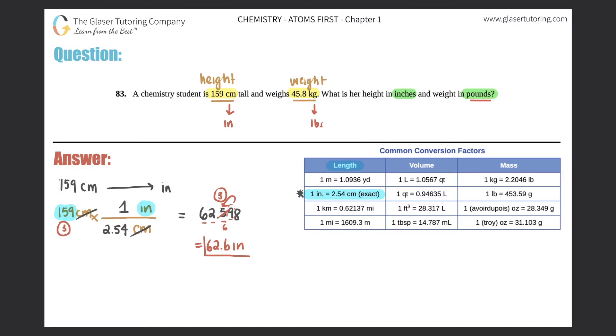Okay, so this part is 62.6 inches. Now we just got to find out what the student's weight is in pounds. So 45.8 kilograms into pounds. Do we know a direct conversion for that? Yes we do. We look at the mass and we see that one kilogram equals 2.2046 pounds. So I'm going to use this conversion to set it up.